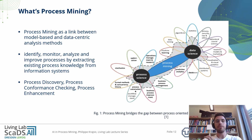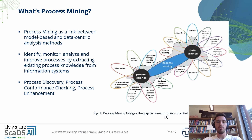We have three different process mining activities. The first is process discovery, where we try to discover process models from the underlying event log. With process conformance checking, we try to check if a process model is as it should be. And process enhancement means we try to enrich an existing process model with additional information.